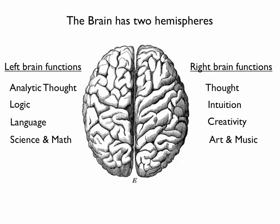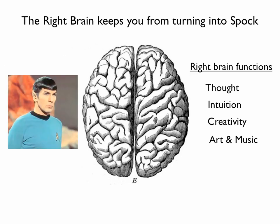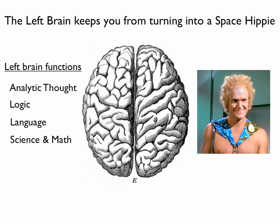You have two sides of your brain. The right brain functions control thought, intuition, creativity, art and music — keeps you from turning into Spock. And the left brain functions concern analytical thought, logic, language, science and math — keeps you from turning into a space hippie.